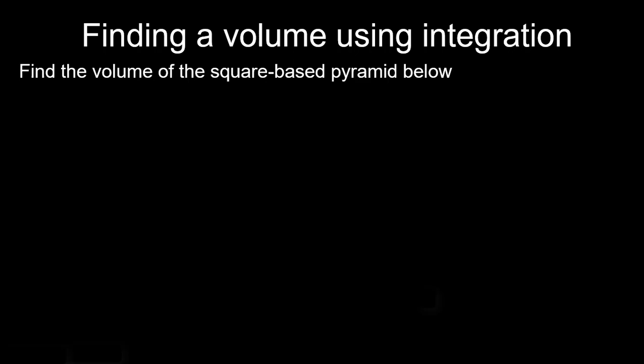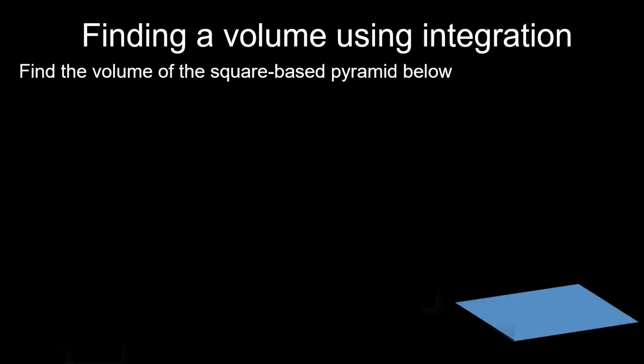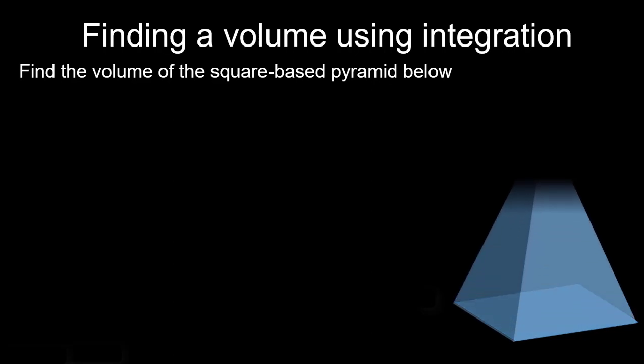Alright, let's find the volume of a structure using integration. Specifically, let's find the volume of the square base pyramid shown here. The plan is to find a couple of estimates first, and then we'll integrate to get an exact volume for our pyramid.